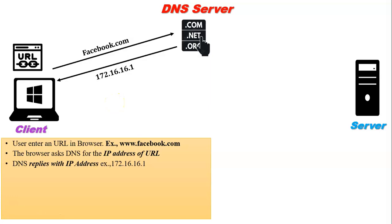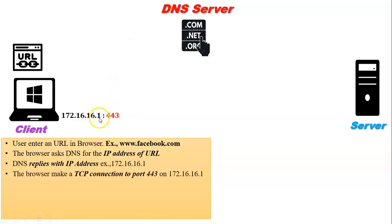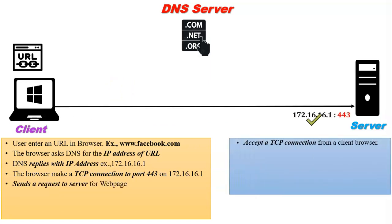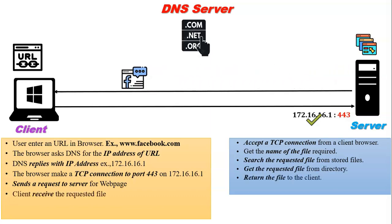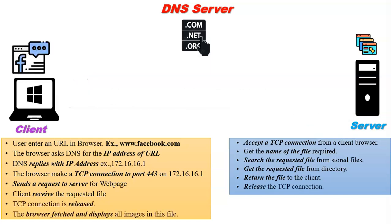Now the browser makes a TCP connection with that IP address. Port number 443 is added with the IP address because the URL uses the HTTPS protocol, and the port number of HTTPS is 443. The browser sends a request to the server, and the server accepts the TCP connection. From the client request, the server gets the name of the required file, searches for it in stored files, and retrieves it from the directory. The server then sends a copy of that file to the client. After the client receives the file, communication ends and the TCP connection is terminated from both sides. The browser fetches the file and displays all images, videos, and text content available on that web page.